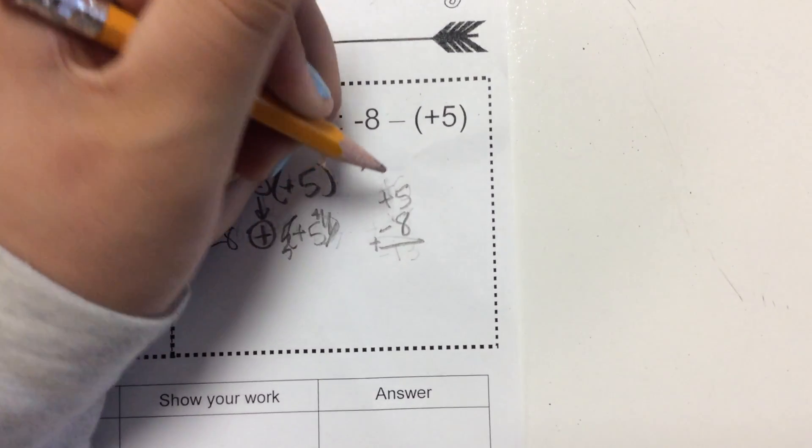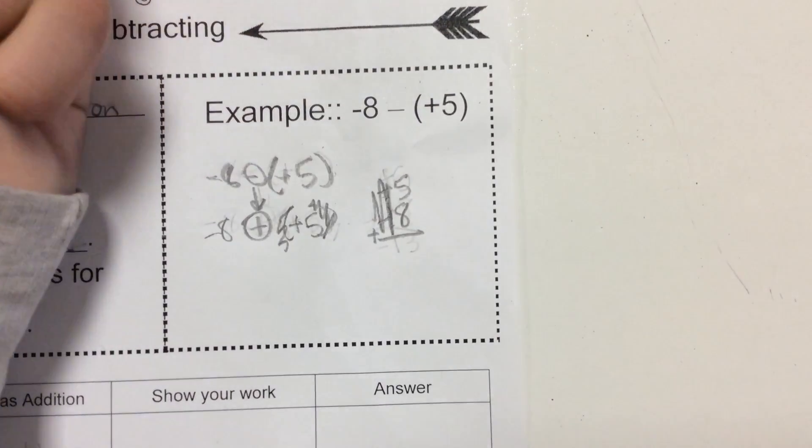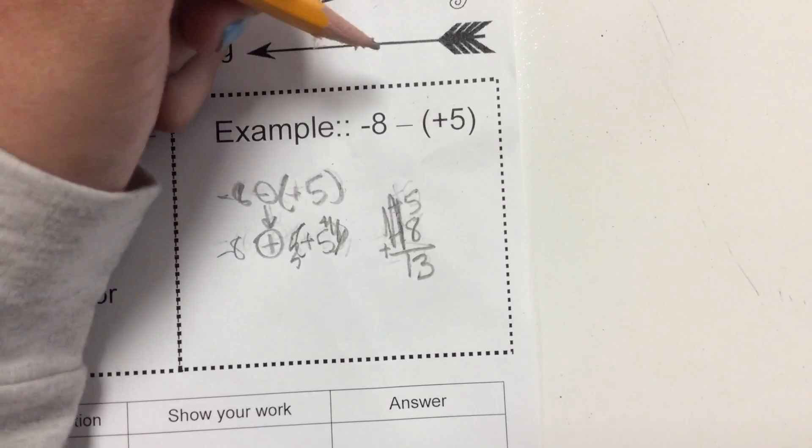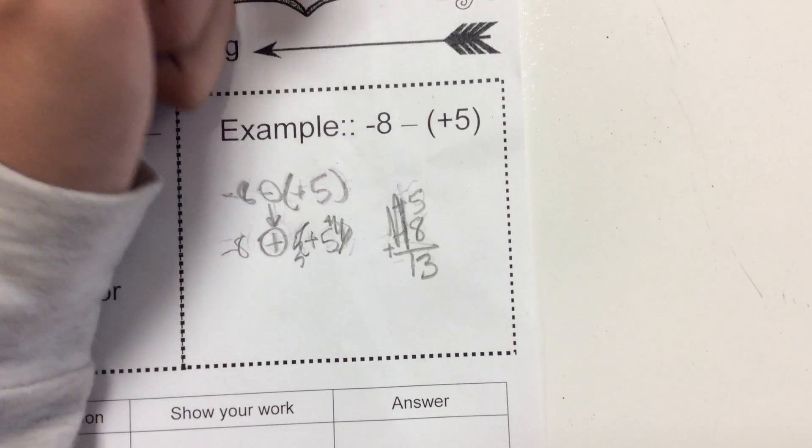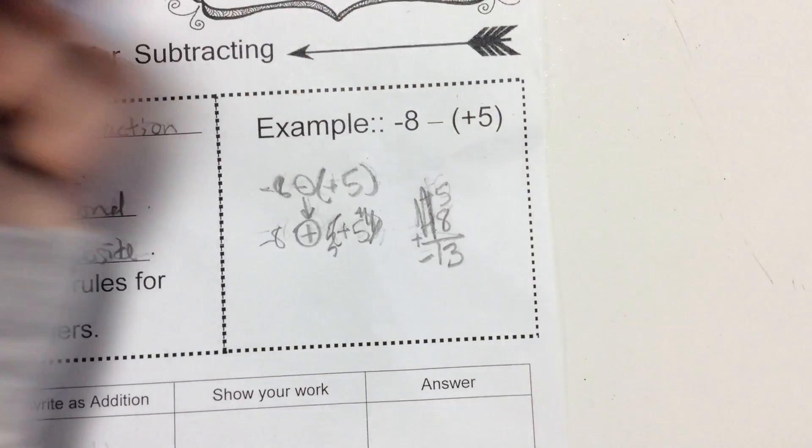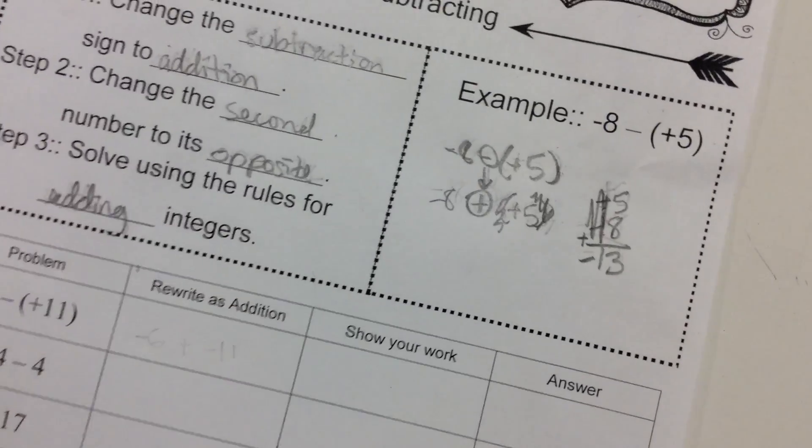If you're adding those, then it doesn't matter about these. It's going to be thirteen. But remember, the bigger number up here is eight, and it's negative. So, eight is bigger than five, so it would be negative. Okay.